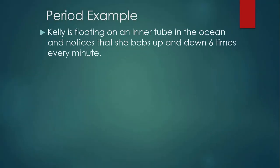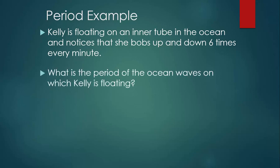Let's take a look at an example. Kelly is floating on an inner tube in the ocean and she notices that she bobs up and down six times every minute. So each time she bobs up and down, that's one complete oscillation. That's one wavelength. So we can figure out the period of the ocean waves that she's floating on. Period is the total time that has passed divided by the number of wavelengths or oscillations produced within that time. So the time that she measured was one minute, 60 seconds, divided by the six complete oscillations that she observed gives us a period of 10 seconds. She bobbed up and down in 10 seconds and then bobbed up and down again in another 10 seconds.